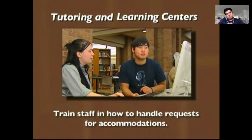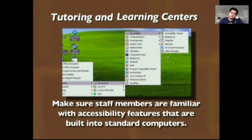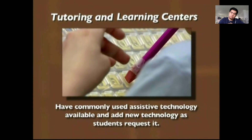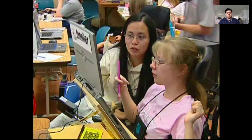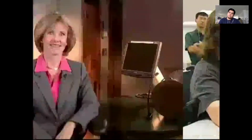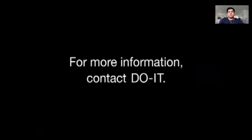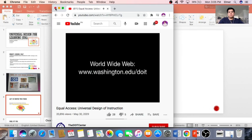Train staff on how to handle requests for accommodations. When a student expresses a need, address it and find out how to best assist them. Design websites to be accessible to people with disabilities, and make sure staff members are familiar with accessibility features built into standard computers. Have commonly used assistive technology available and add new technology as students request it. Universally designed instruction makes everyone feel welcome and fully included in the learning process.